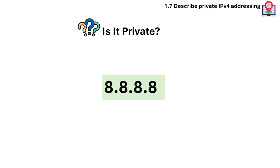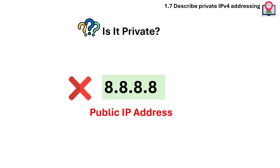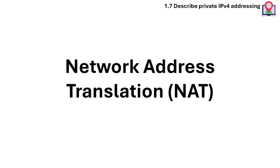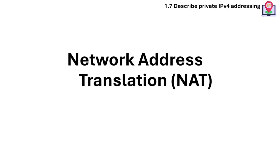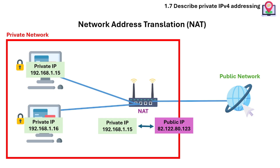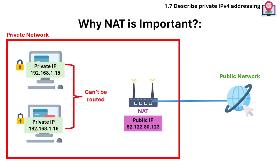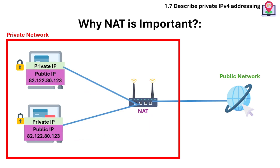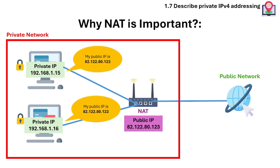Is 8.8.8.8 private? No, it's a public IP address used by Google for their public DNS servers. These private IP addresses are free to use in internal networks, but if a device with a private IP wants to access the internet, it must use NAT. NAT is a method used by routers to translate private IP addresses into a public IP address, allowing internal devices to access the internet. NAT hides internal IPs, adding a layer of security, and it also allows multiple devices to share one public IP.